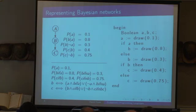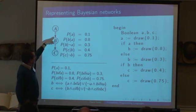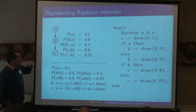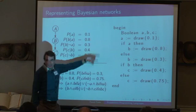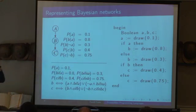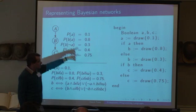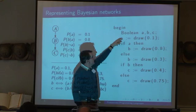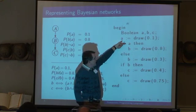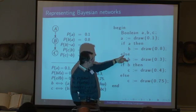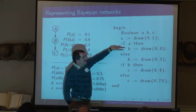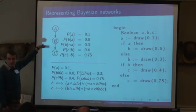Simula can represent any Bayes net. Here is a simple Bayes net: the probability of A, the probability of B given A, and the probability of C given A. Here is that Bayes net in Simula — it's going to have exactly the same distribution. If you do rejection sampling on this it's going to have exactly the same distribution as the Bayes net. We're going to sample A, then sample B depending on A — if A is true we draw one sample, if A is false we draw from another — and the independent draws correspond exactly to the parameters of the Bayes net.